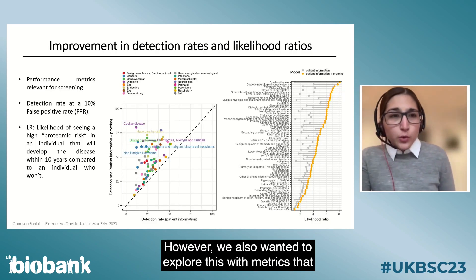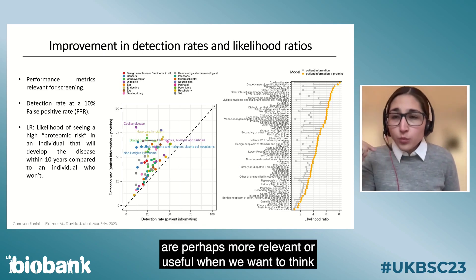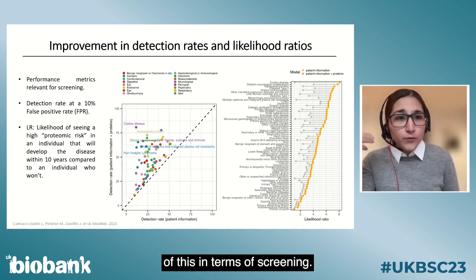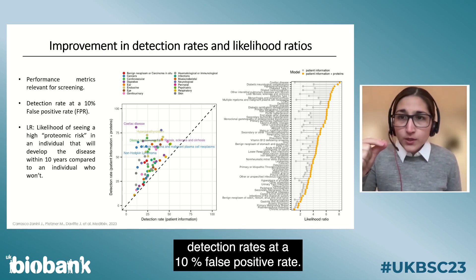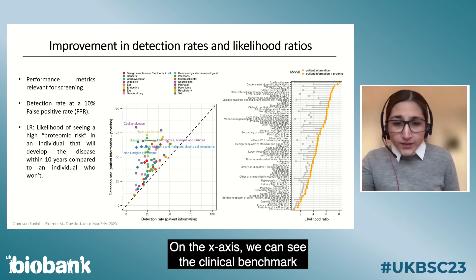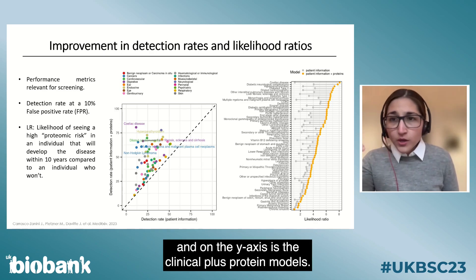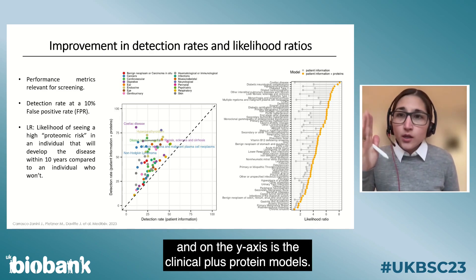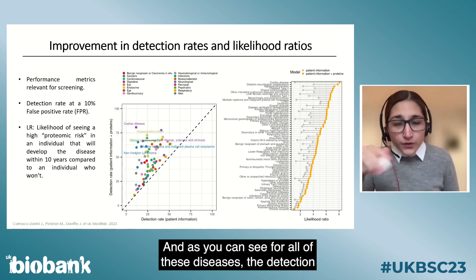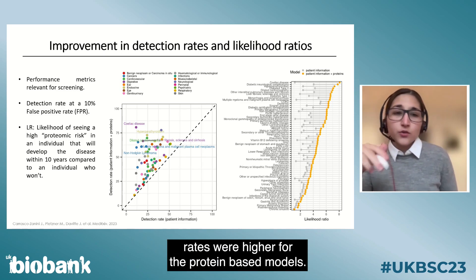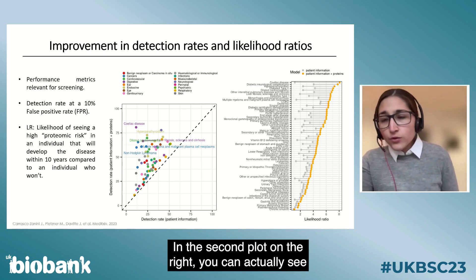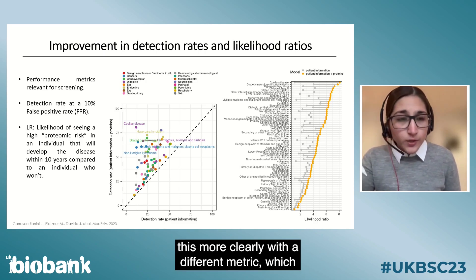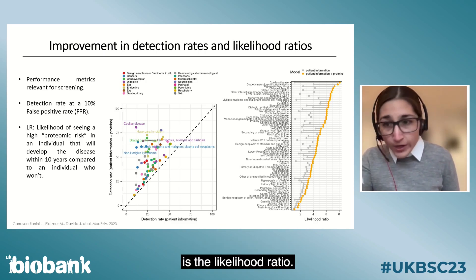We also explored metrics more relevant for screening. The first plot shows detection rates at a 10% false positive rate, with the clinical benchmark on the x-axis and the clinical-plus-protein models on the y-axis. For all these diseases, detection rates were higher for the protein-based models. The second plot shows this more clearly using the likelihood ratio metric.